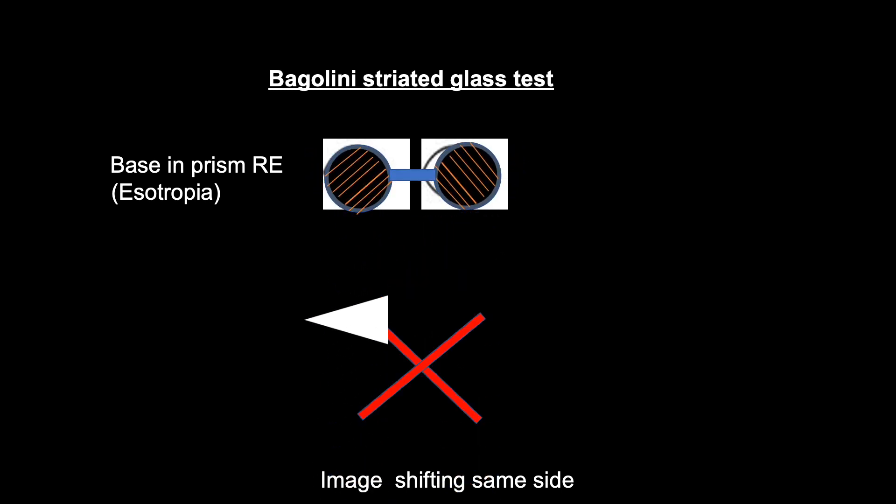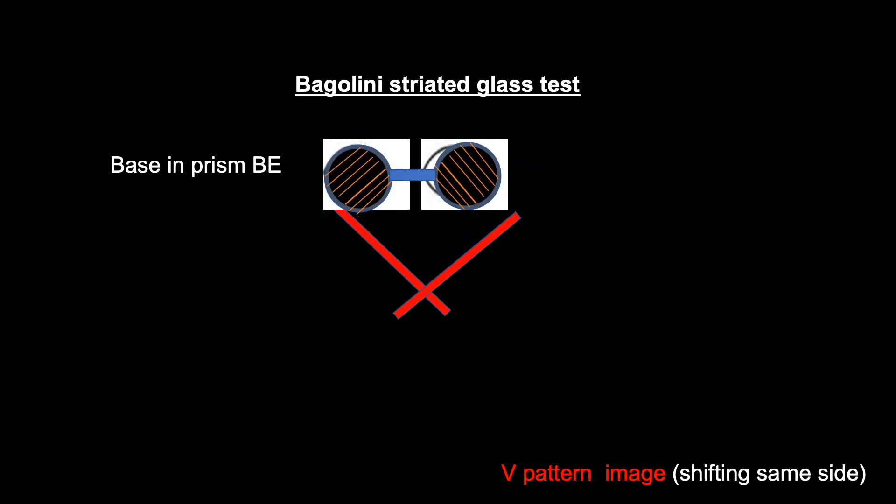When wearing Bagolini glasses, the base in prism is placed in front of the right eye, the image is shifted to the same side. When we place the base in prism in both eyes, the images are shifted to the same side allowing us to clearly see the V pattern.